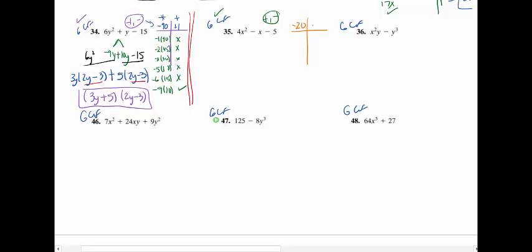So 4 times negative 5 is negative 20. Two numbers that multiply to give me negative 20 that when I add them I get a negative 1. And most of you can see that off the top of your head should have been a negative 5 times a positive 4. So I've got a negative 5x plus 4x for my splitting of my terms.